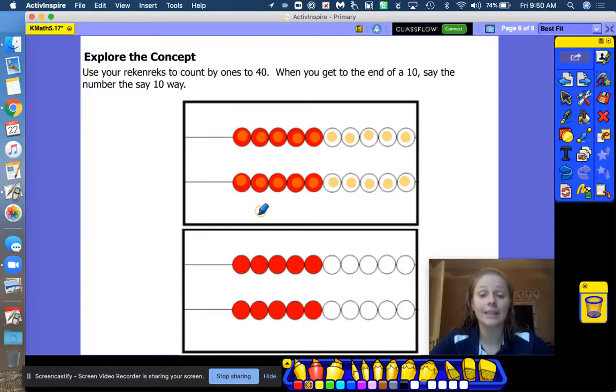Count on. 21, 22, 23, 24, 25, 26, 27, 28, 29, 30. Good. Watch my mouth. 30. Well done. For 30, we say what? Let's say 10 way. How many 10s? 1, 2, 3. Good. Say three 10s. 30. Good job.